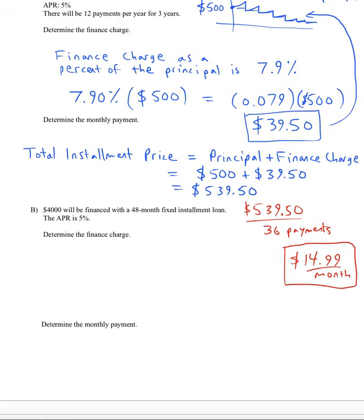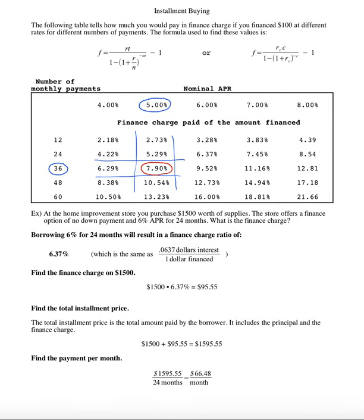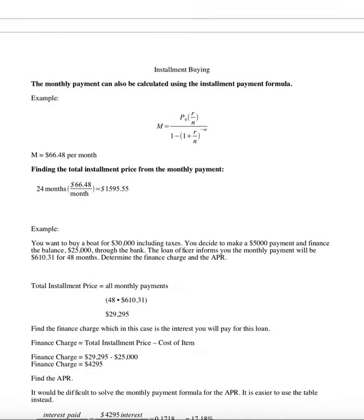I'll do another one here down below but I'm going to calculate it in a little bit different way. This time I'll use the formulas to calculate everything. Four thousand dollars is going to be financed with a forty eight month fixed installment loan. The APR is five percent. Can you find the finance charge? If you look back on one of the previous pages here, there's actually a formula for the finance charge. I could use that with the r value, the n value that's given in order to find the finance charge that way.